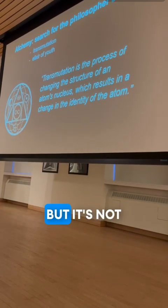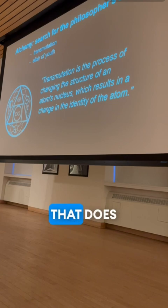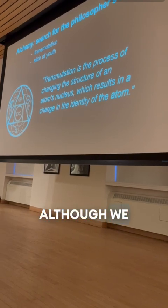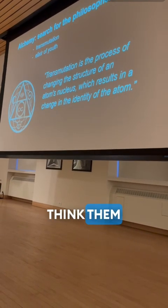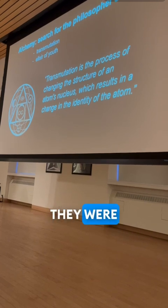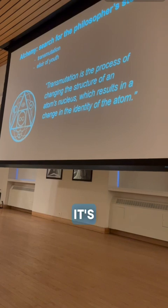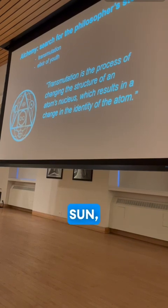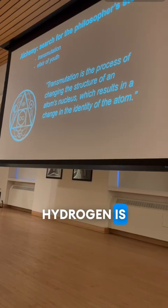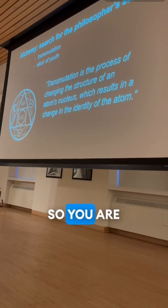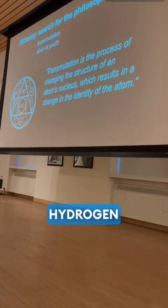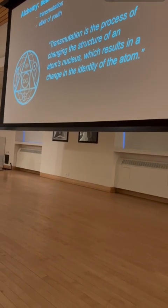Alchemists, although we think of them as little hacks, were serious about this. In reality, transmutation is happening all the time inside the sun where hydrogen is fusing into helium—you are basically transmuting hydrogen atoms into helium atoms.